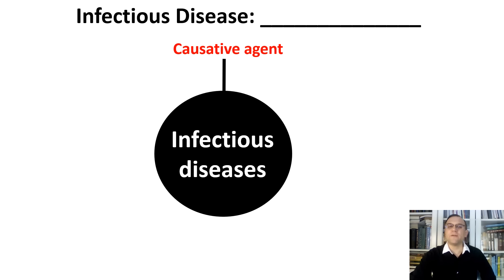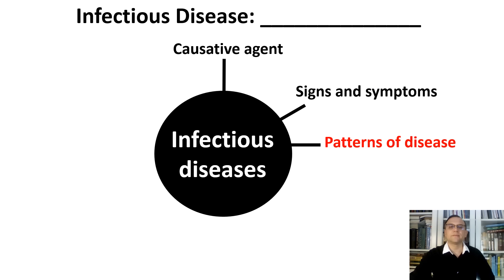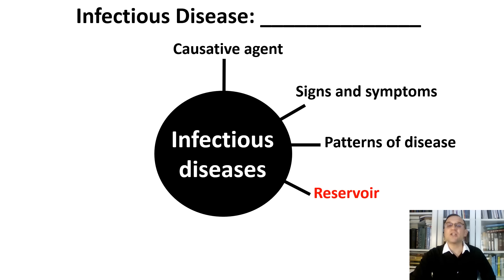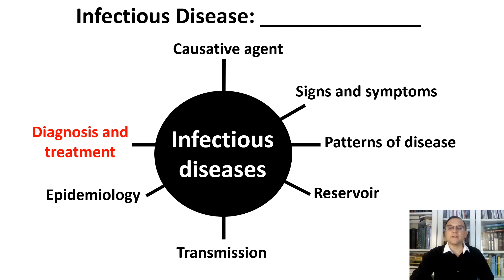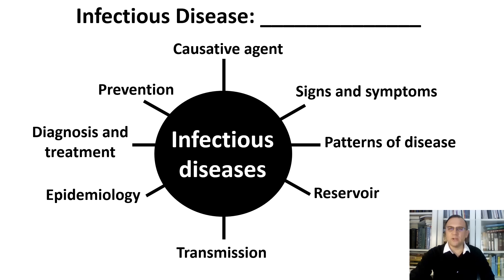Then signs and symptoms of the disease; the pattern of the disease, describing stages of the disease; the reservoir of the disease; transmission of the disease; the main points of the epidemiology of the disease; diagnosis and treatment; and last but not least, prevention of the disease. I will now elaborate on each of these topics.